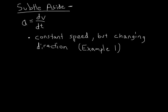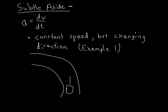Before we get too involved in separating x and y motion, there's a subtle point about acceleration. If something is going at a constant speed, the velocity magnitude isn't changing. But if it's changing direction, we still have an acceleration. For example, a car taking a turn at constant speed is constantly changing direction, so its velocity is changing and there is an acceleration.